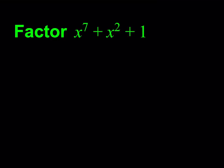So what are we supposed to do here? We're supposed to factor this. When you look at an expression like this — x to the 7th plus x squared plus 1 — there's no common factor, there's no difference of two squares, there's no cubes, and so on. It's a completely different idea.